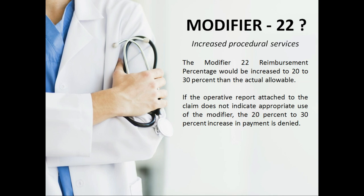Modifier 22 reimbursement percentage would be increased by 20 to 30% above the actual allowable amount. However, if the operative report attached to the claim does not indicate appropriate use of the modifier, the 20 to 30% increase in payment will be denied. Whenever we submit a claim with modifier 22, we must submit the relevant medical records — otherwise the insurance company will deny the entire claim for lack of information, and we will have to resubmit with correct records to get paid.